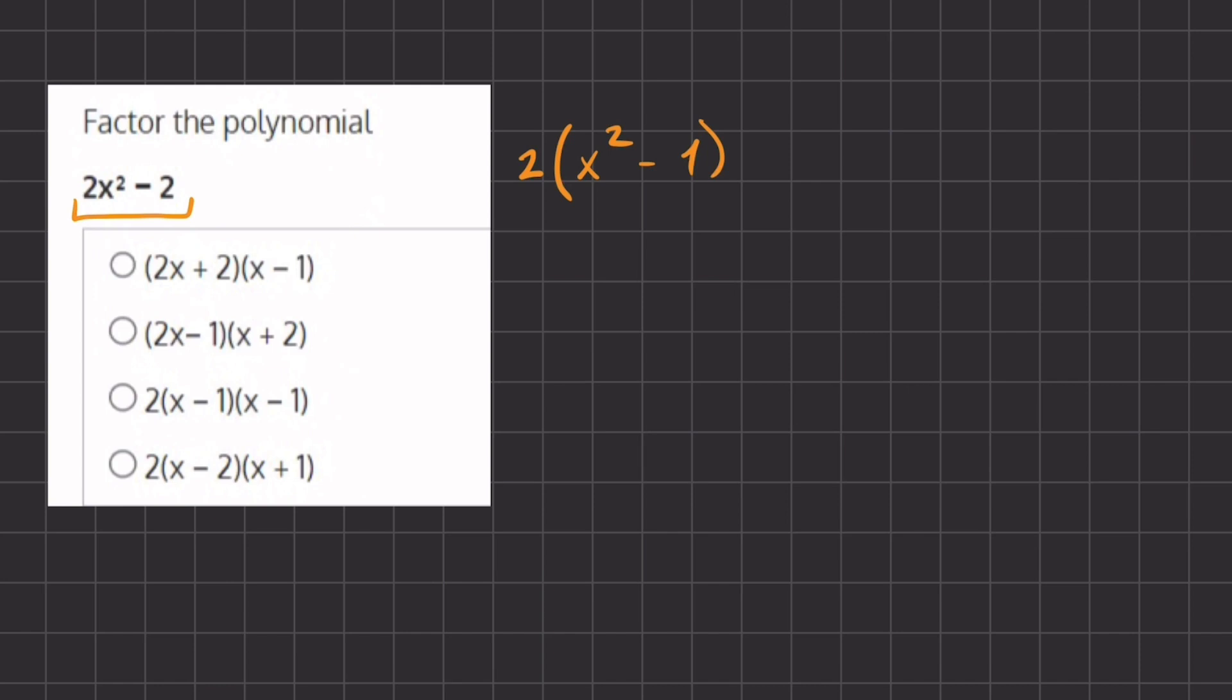Inside our parentheses, we have something called a difference of squares, and that is because we have a difference of 2 squares.